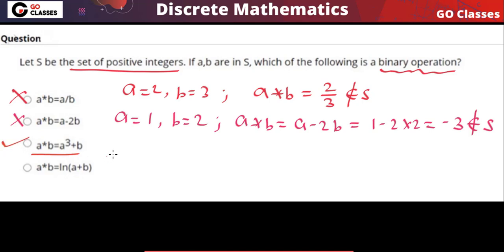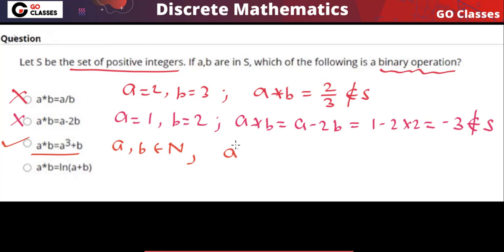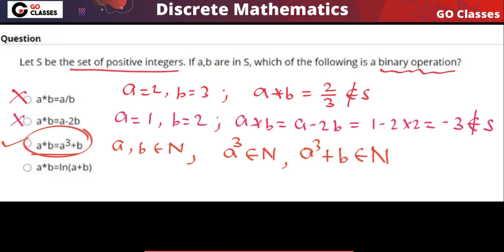This next operation is closed. If you take any two positive integers — positive integer means natural number — then a³ is also a natural number, and a³ + b is also a natural number. So I can say this operation is a binary operation.